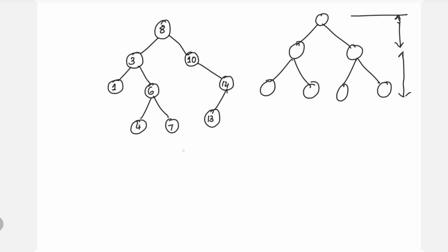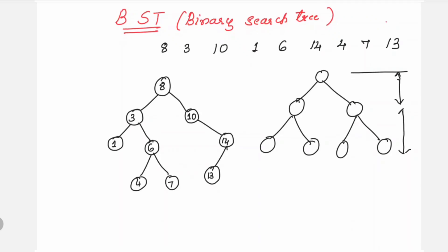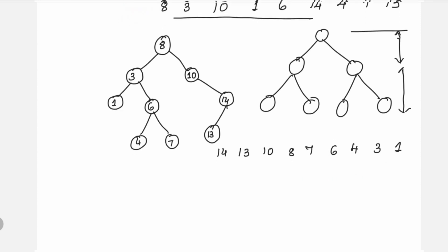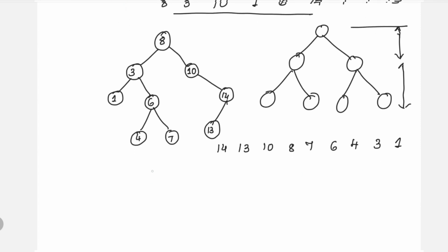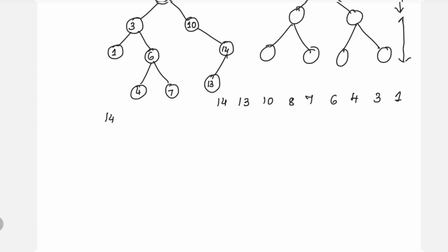For example, if you take the same elements but change the order to: 14, 13, 10, 8, 7, 6, 4, 3, 1 — and try to construct a binary search tree, the resulting binary tree will be a skewed tree with many levels.